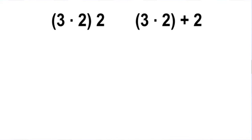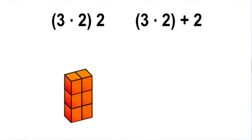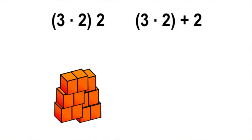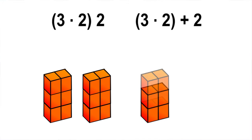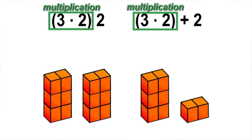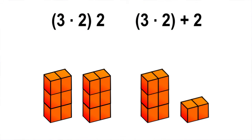The two expressions are 3 times 2 multiplied by 2, and 3 times 2 plus 2. Start with the first expression: place 3 rows of 2 cubes to show 3 times 2, then double it to show it is multiplied by 2. Now model the second expression: place 3 rows of 2 cubes to show 3 times 2, then place 2 more cubes to show the plus 2. Both expressions start with 3 times 2, or 3 rows of 2 cubes. However, the first expression doubles the 3 rows of 2, while the second expression just adds 2 more cubes.